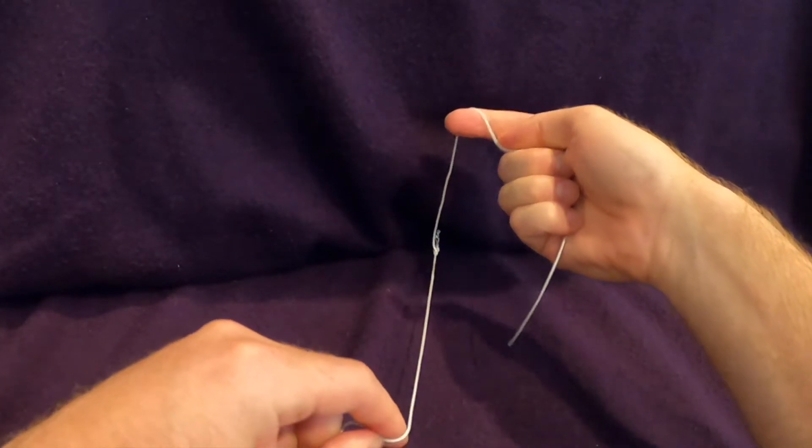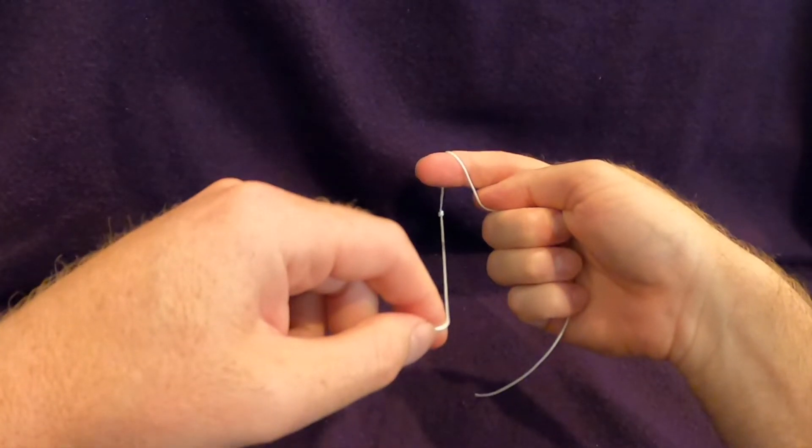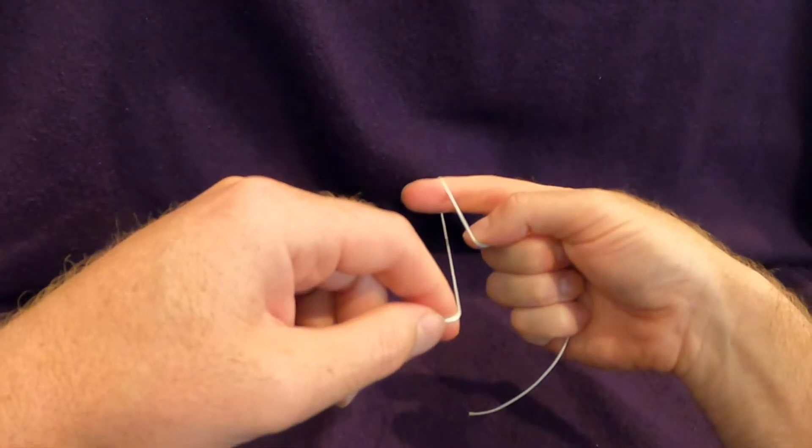The knot is tightened and the next throw begins by draping the suture across the index finger with the tail pointing towards the person tying the knot.